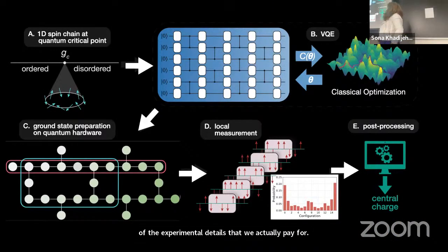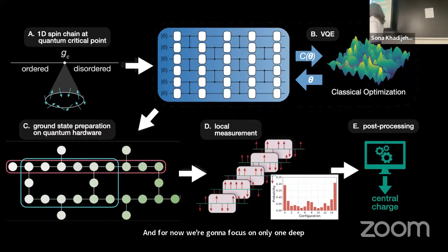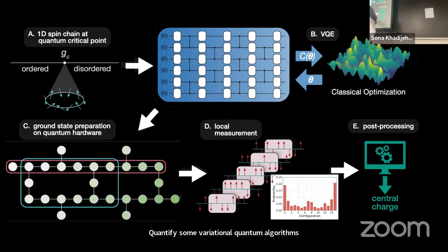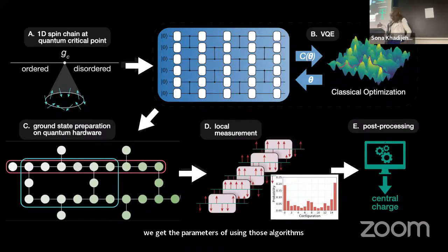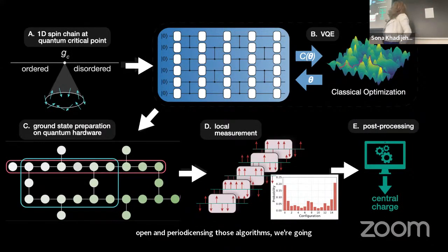This is the overall picture of the experimental setup. The very first step is to have a 1D quantum spin chain of the desired size. The next step is to prepare this quantum spin chain at the critical point using variational quantum algorithms. Once we have the circuit parameters from those algorithms, we set the parameters for both open and periodic boundary conditions. After preparing the ground state, we perform measurements, calculate all the different probabilities for different configurations, apply error mitigation steps, and then do post-processing and scaling to extract the central charge.